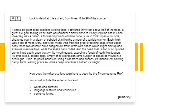Here we have our question two, and you'll note that we have some bullet points to guide our annotation and response. I'd just like to flag the final bullet point about sentence forms — I think that can lead us down some blind alleys, and I'm yet to see a full mark response that really digs to the next level about the use of minor or complex sentences. So instead I'd really focus on the words and phrases and the language features and techniques that really stand out to describe the Tyrannosaurus Rex.